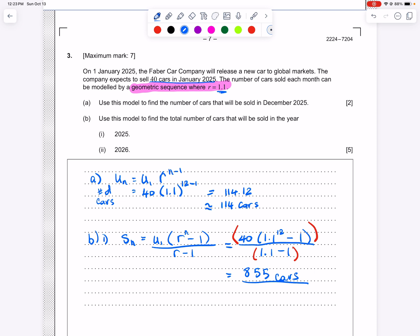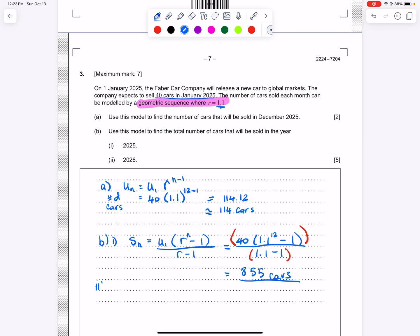Now they're asking for the number of cars sold in 2026. But we don't have the first term for 2026. We do, however, have the last term, 114, for 2025. So this, remember, is December 2025. If we take that number, we can find January for 2026. So let's write this down. This is not what they're asking for, but we do need this information.